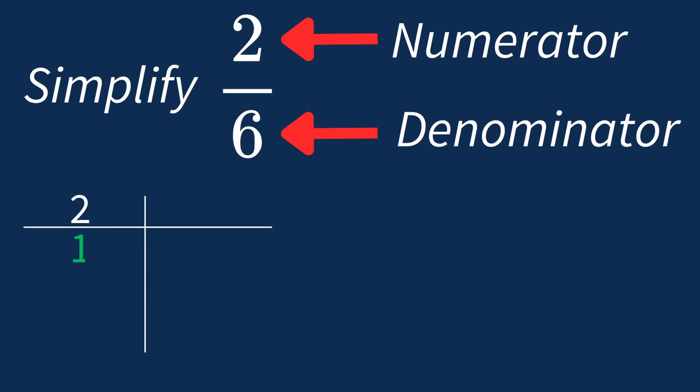For 2, the factors are 1 and 2. For 6, the factors are 1, 2, 3, and 6.